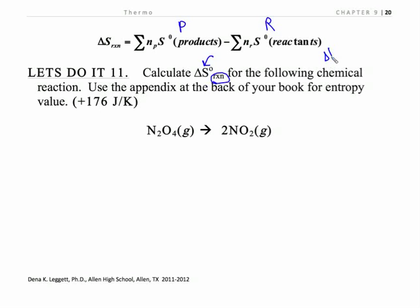Now for delta H⁰ and delta G⁰ we're looking at formation values. For entropy we're looking at the positional entropy. Notice that there's no delta in front of these. So let's calculate this one.